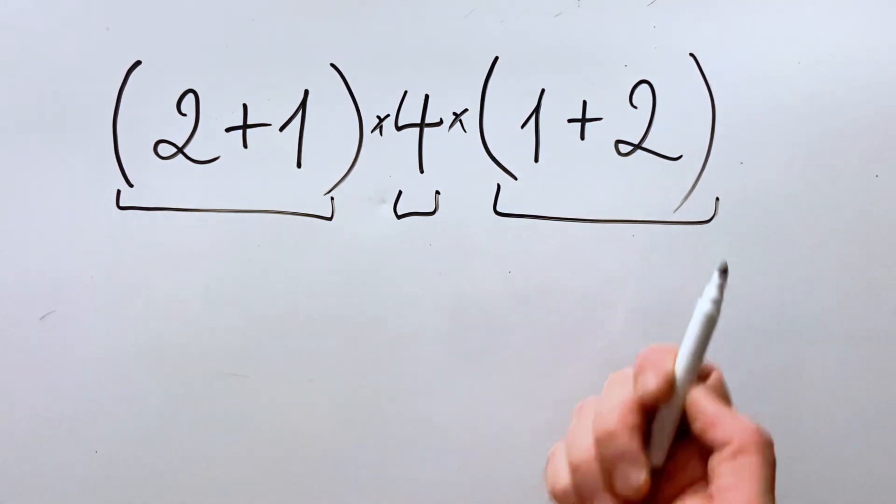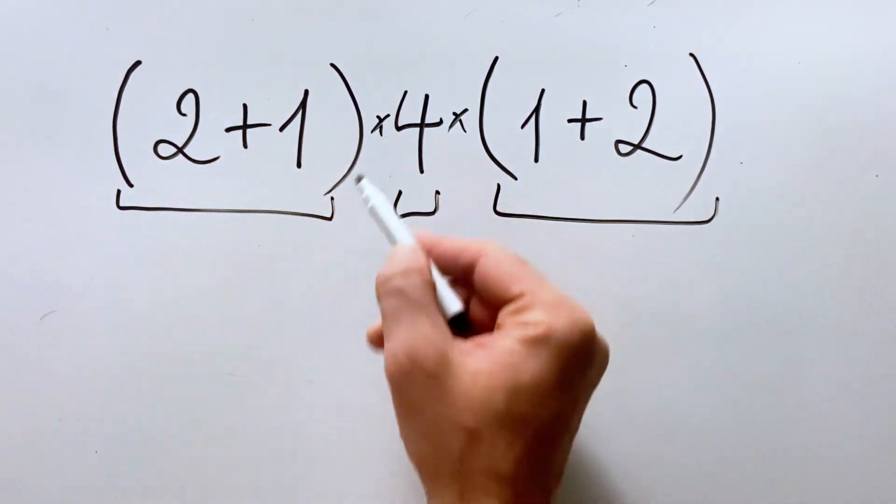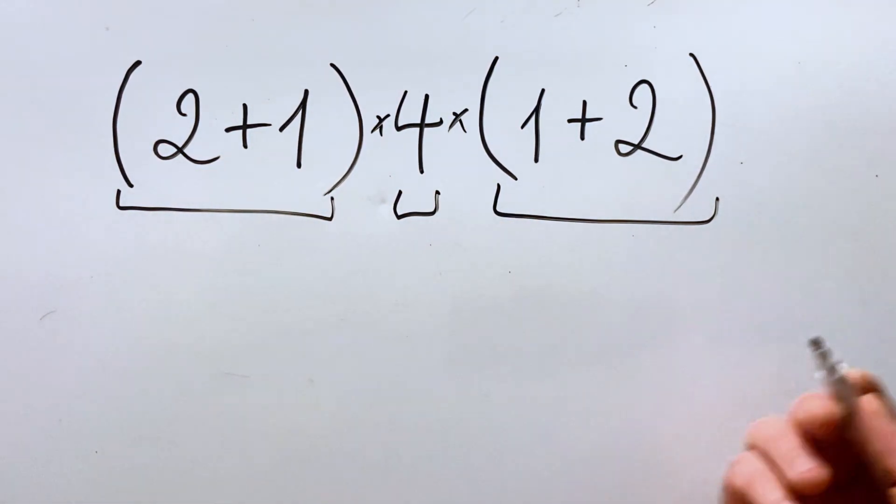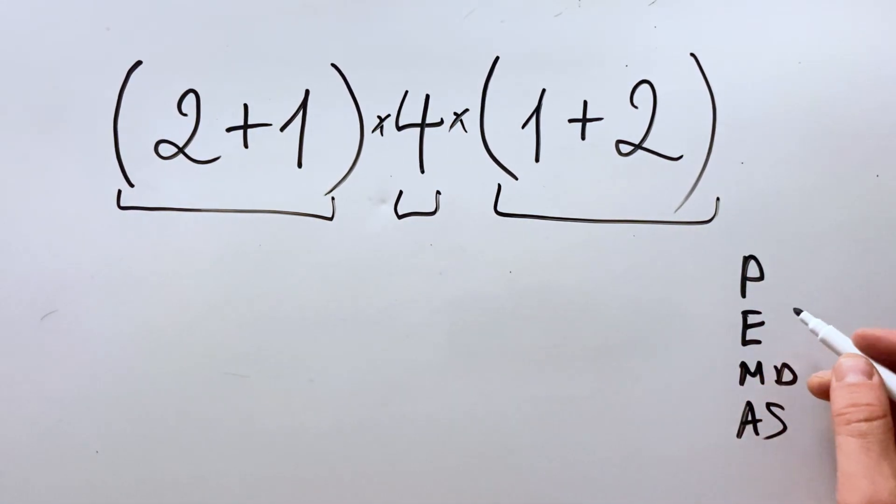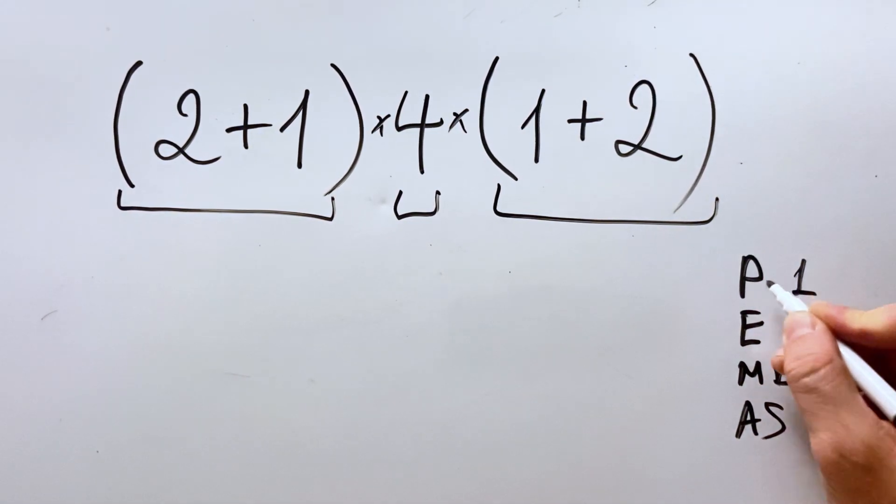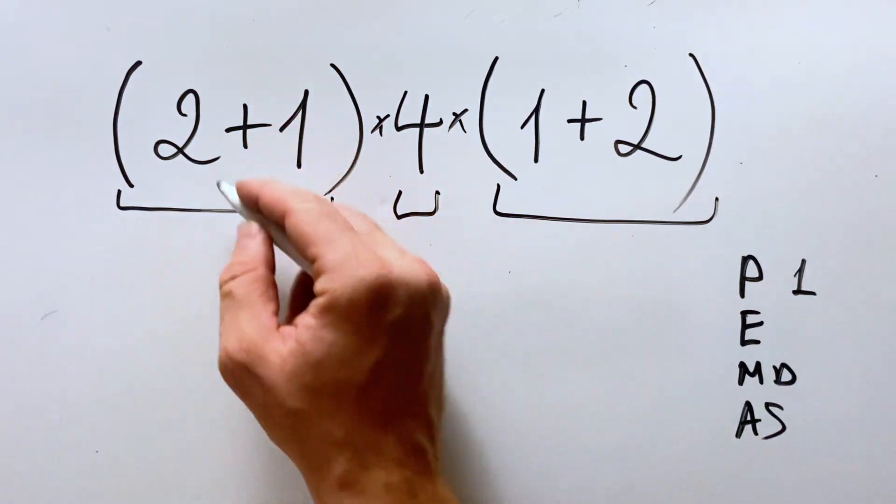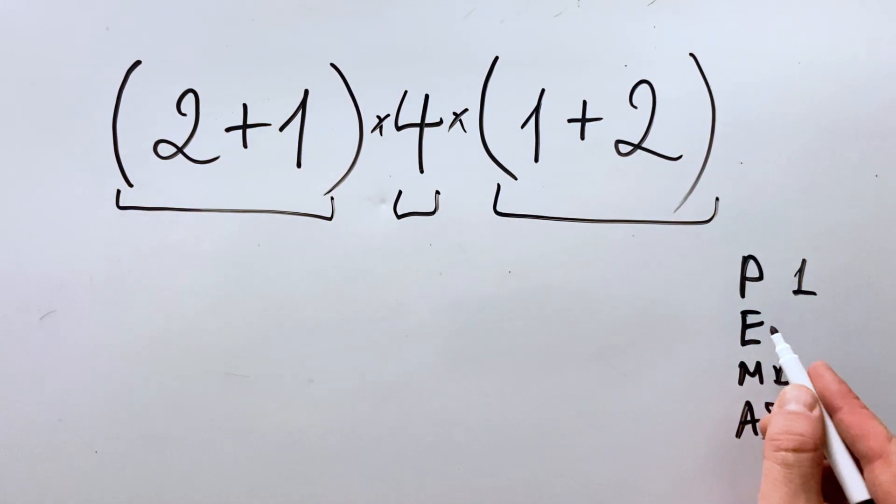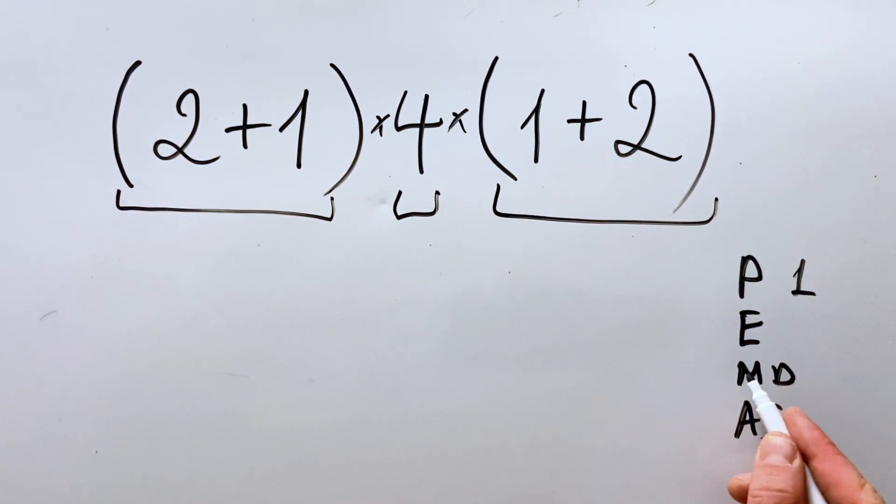To solve this, you must remember that first you do what's inside the parenthesis. So if you have the order of operations PEMDAS, we know that P stands for parenthesis and we must do it first. Then we don't have exponents, we have multiplication. So after parenthesis, we do multiplication.